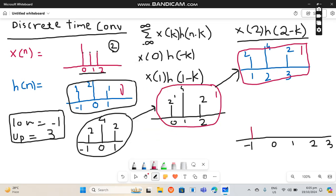On minus 1 you are getting just 2. On 0 you are getting 4 plus 2 equals 6. On 1 you are getting 2 plus 4 plus 2, so you get 8. On 2 you are getting 6, and on 3 you are getting 2.